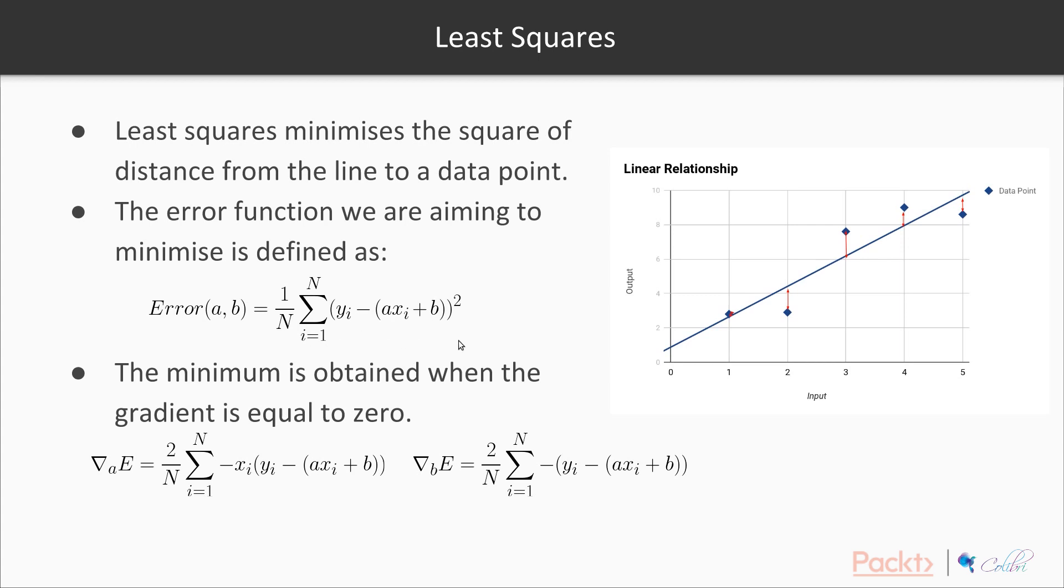with respect to the coefficients a and b. So then we obtain an expression for when the error is minimised, what value should this be? So we can set this to zero and then we could actually, in theory, rearrange this and obtain an expression for a and b analytically. But we're not going to do that.